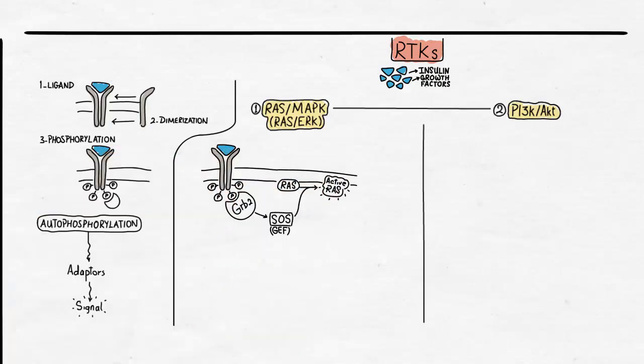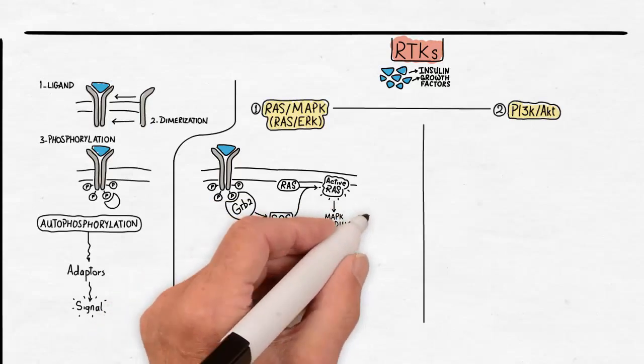This SOS activates in turn the RAS protein. The RAS actually is a small G protein that gets activated by the exchange of GDP for GTP. That's why the SOS is also called RAS-GEF, or guanosine exchange factor. The RAS, once activated, starts a phosphorylation cascade.